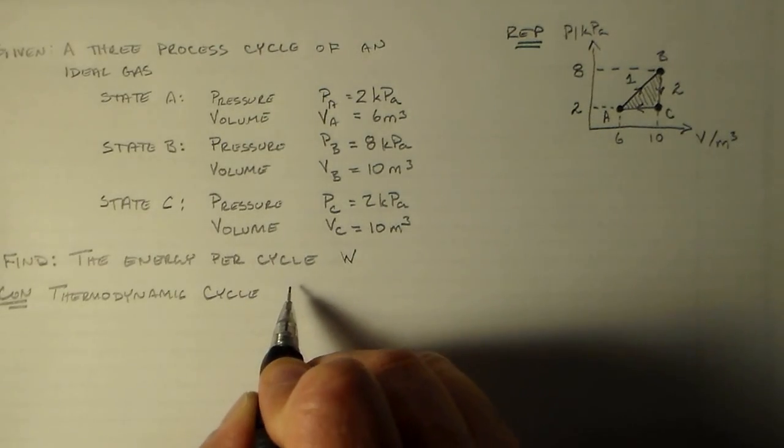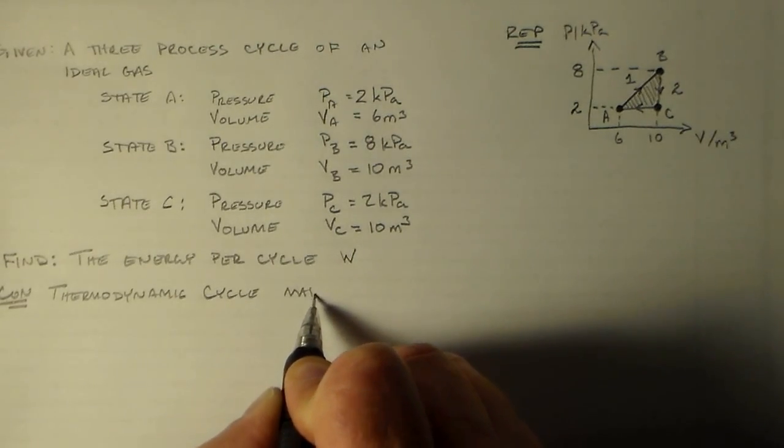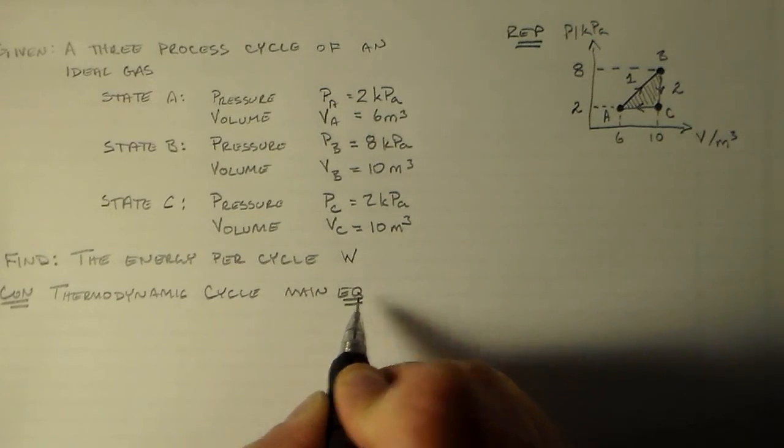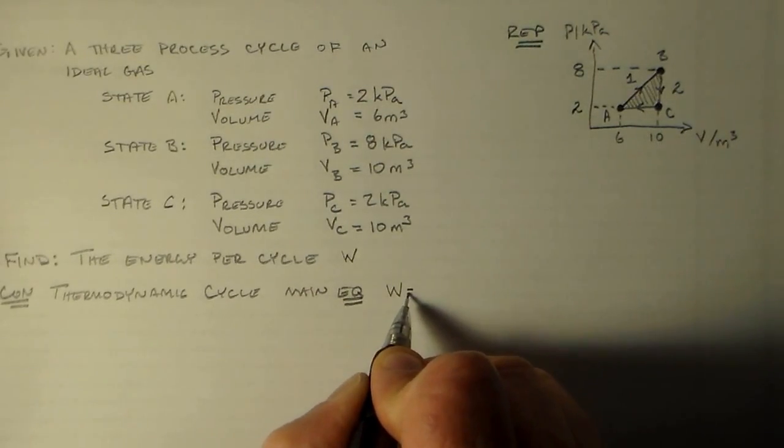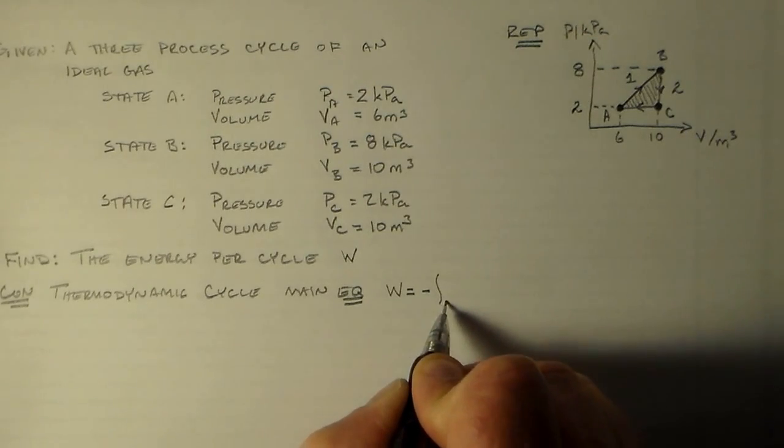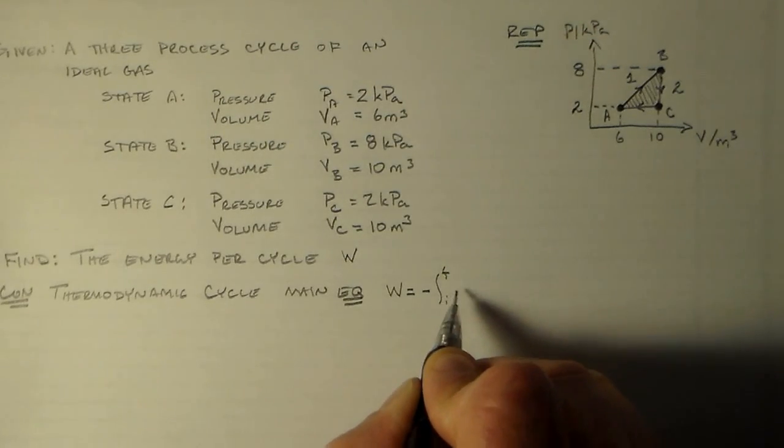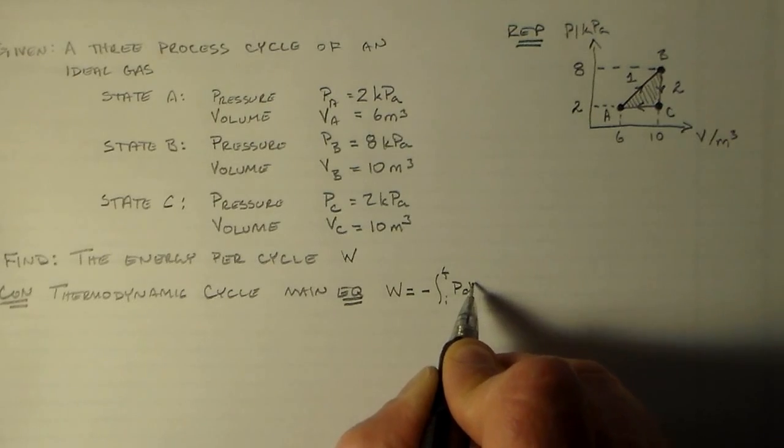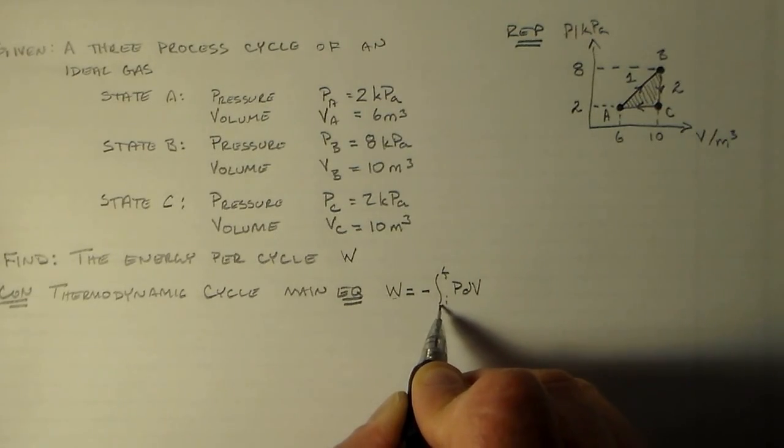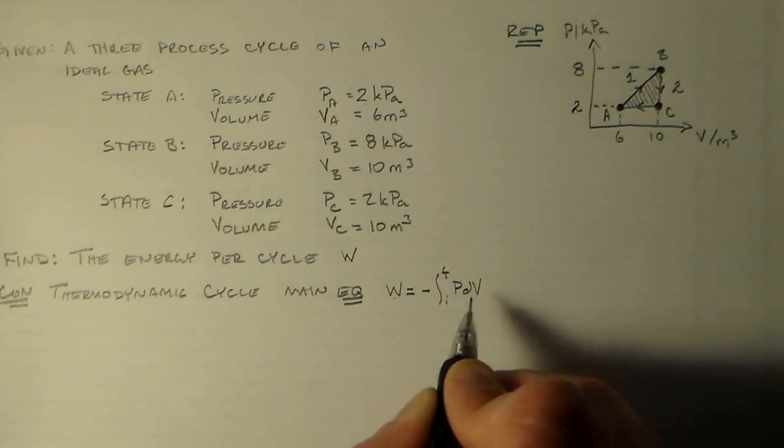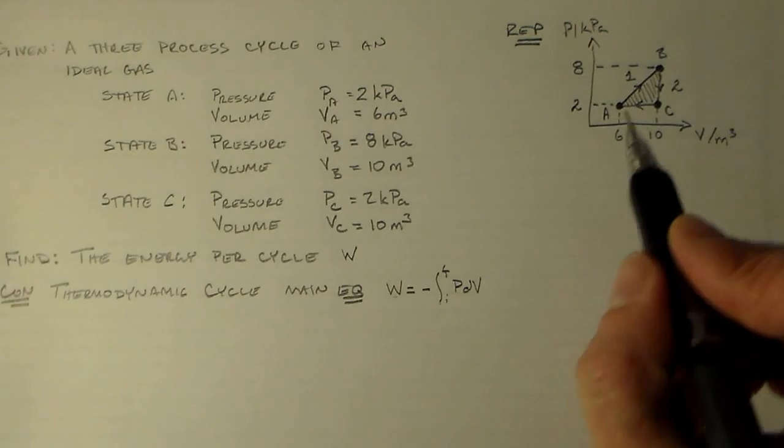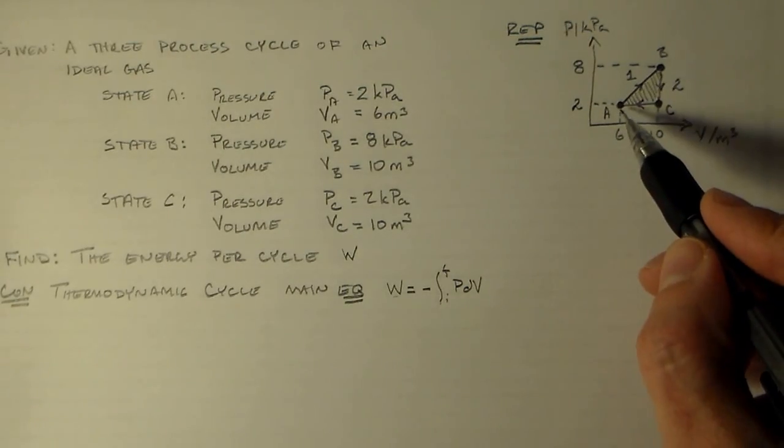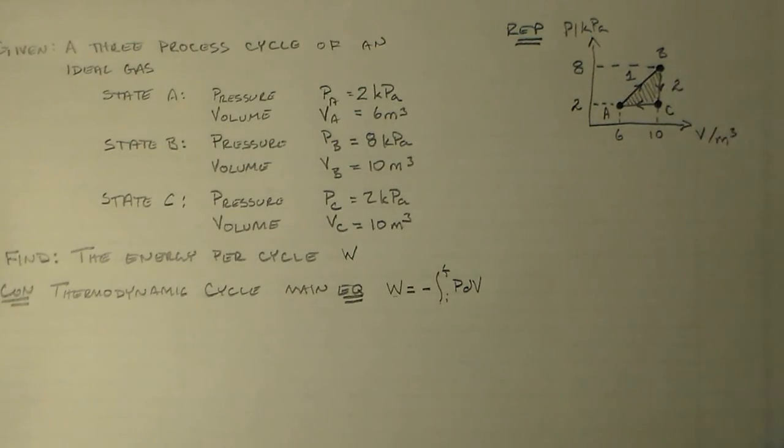And our main equation is going to be the work per process. So the work is the integral from the initial state to the final state of the pressure, using the volume as the integral, integrating over the volume.